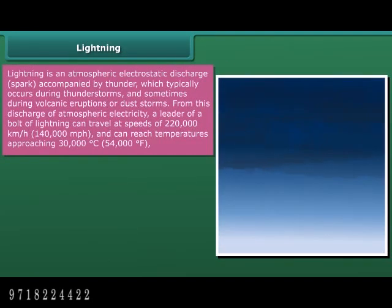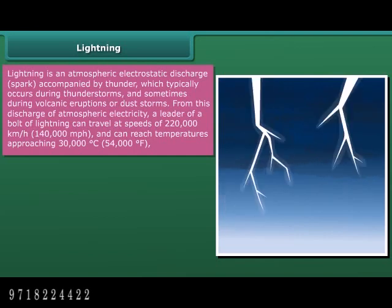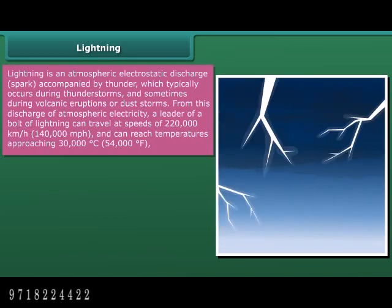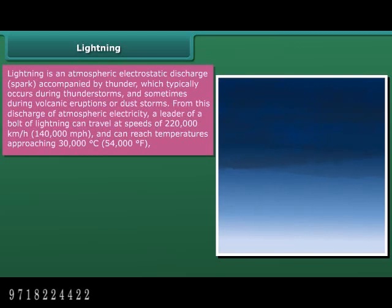Lightning is an atmospheric electrostatic discharge accompanied by thunder, which typically occurs during thunderstorms and sometimes during volcanic eruptions or dust storms. A leader of a bolt of lightning can travel at speeds of 220,000 km per hour and can reach temperatures approaching 30,000 degrees Celsius, that is 54,000 degrees Fahrenheit.